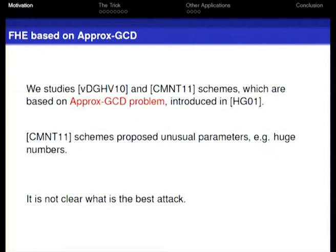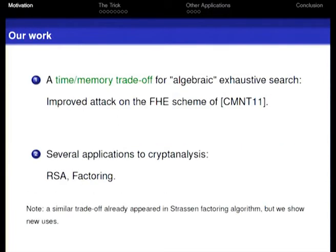This scheme uses this problem and proposed very unusual parameters — parameters with very huge numbers. Therefore, it is not clear what the best attack is. In our work, we propose an algorithm with a time-memory tradeoff for algebraic exhaustive search that gives an improved attack on the fully homomorphic encryption scheme proposed by CMMT11. We also give several other applications using our algorithm to the realm of cryptanalysis.